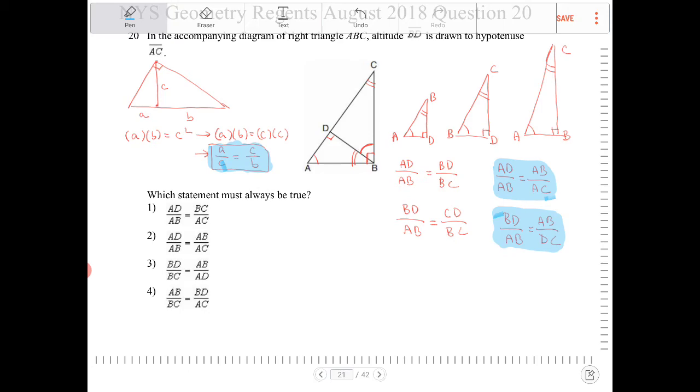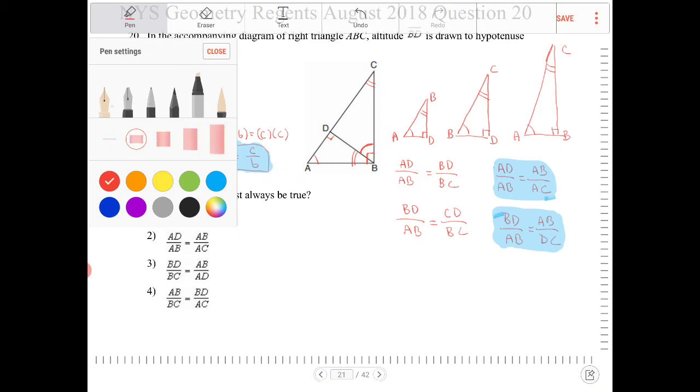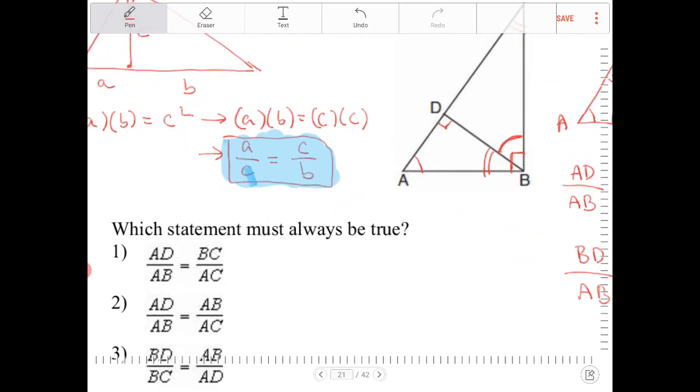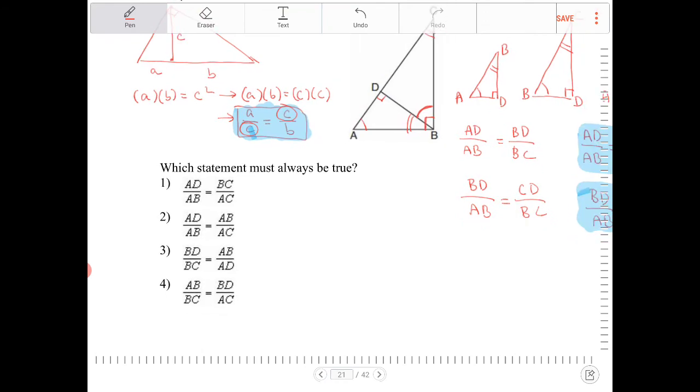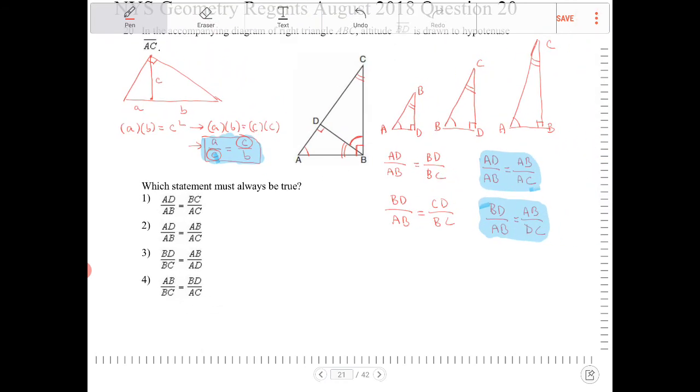So you can certainly list out the various different types of proportions, but what you want to do is you want to look for in the answer key where you have something similar where you have in the denominator of one fraction having the same value as the numerator of the second fraction, or the same in reverse. And if you look at the answer choices here, the only one that fits the bill is option two. So AD over AB is equal to AB over AC, which is exactly what we have written in the beginning.